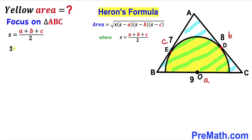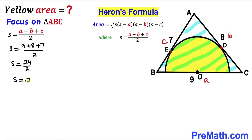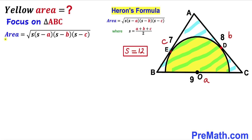Now let's calculate the semi-perimeter S. S = (a + b + c) / 2 = (9 + 8 + 7) / 2 = 24 / 2 = 12 units.